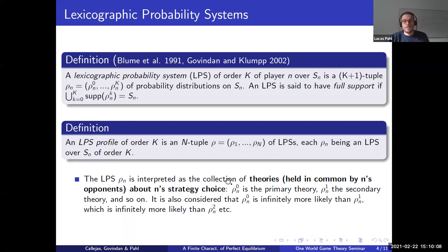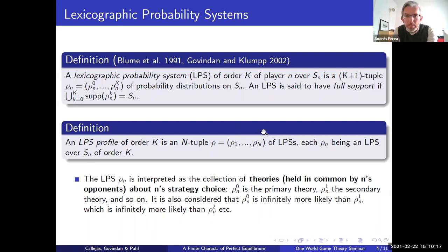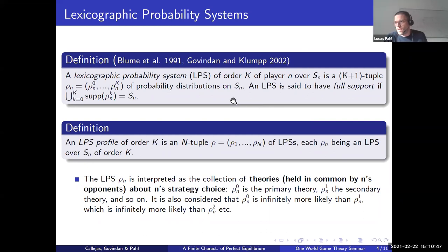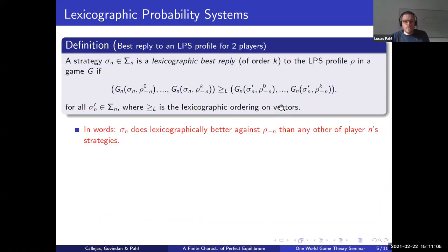Question from audience: Do you assume that the different levels of the lexicographic probability system have disjoint supports? Response: No, there is no assumption of that kind. The questioner notes that without disjoint supports the interpretation of primary and secondary theory may be less compelling, since the supports may overlap and theories are not perfectly complementary. The speaker acknowledges this and confirms the classical definition does not impose disjoint supports.